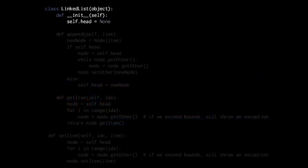Now consider how we might implement a linked list as a Python class. We'll keep things simple and only include operations for retrieving values, changing the value of an existing node, and appending an additional item. We call this class LinkedList, and have it inherit directly from the object type. In the constructor, we give our linked list object an attribute head, which is our reference to the head node. When you create a new linked list it always starts empty, so in the constructor we simply assign self.head to None.